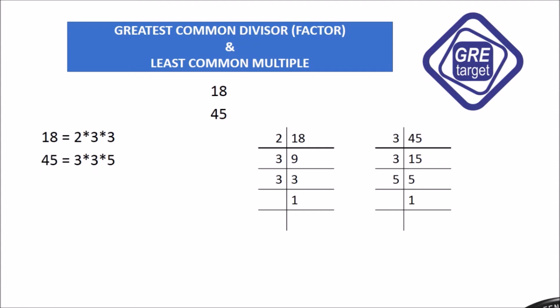We have to find the greatest common divisor, so we find the common factors. The first common divisor is 3 for 18 and 45. The second common divisor is 3. So the answer we get is 3 into 3 equals 9.